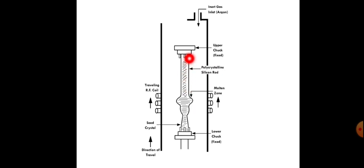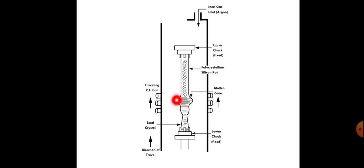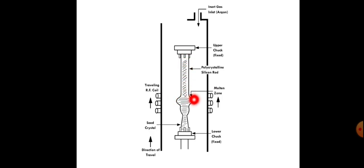There will be a polycrystalline silicon rod which may contain some impurities. There is a molten zone present, and the complete setup is fixed here with a lower chuck. There is an RF traveling coil that is circular in shape. When that RF coil is heated, the corresponding region of the polycrystalline silicon rod will be melted — a circular molten zone surrounds the rod. This RF coil can travel along the length of the rod, heating and melting corresponding regions as it moves.